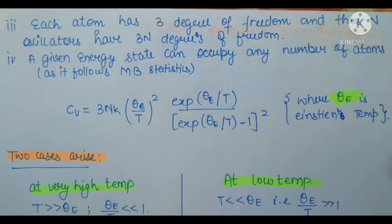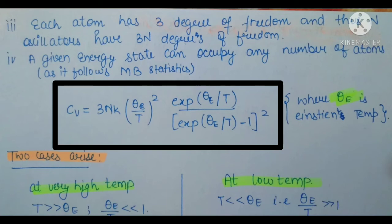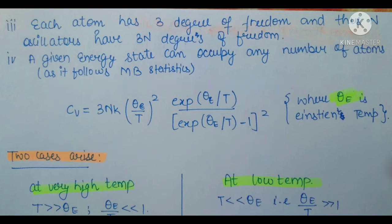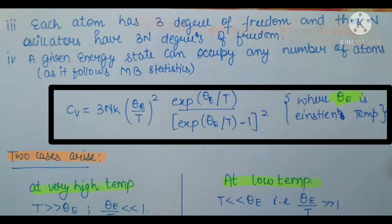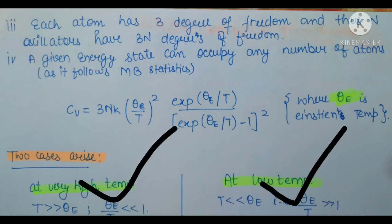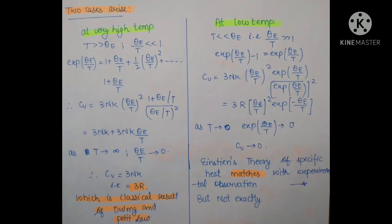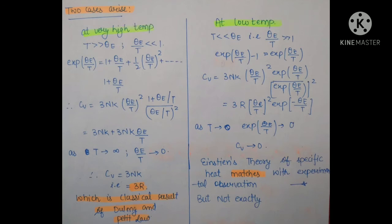Einstein proposed his quantum theory as the next step. The classical theory failed because it was oversimplified. Its key assumptions were: all atoms in a crystal are independent oscillators — which is unrealistic — and since all oscillators are identical, they have the same frequency. These oversimplified assumptions caused the failure of the classical theory.